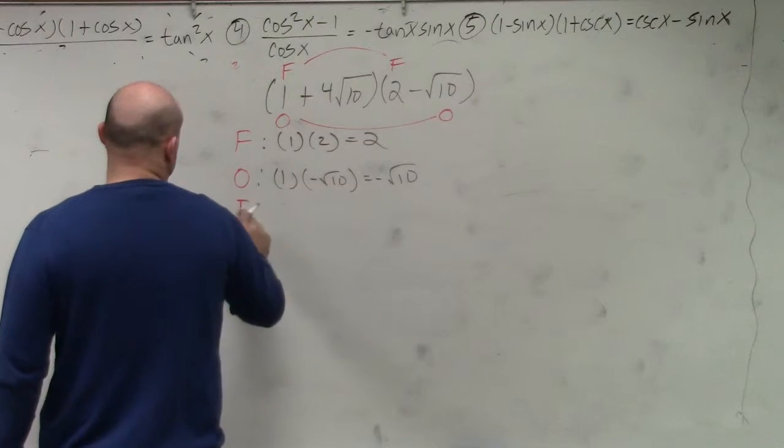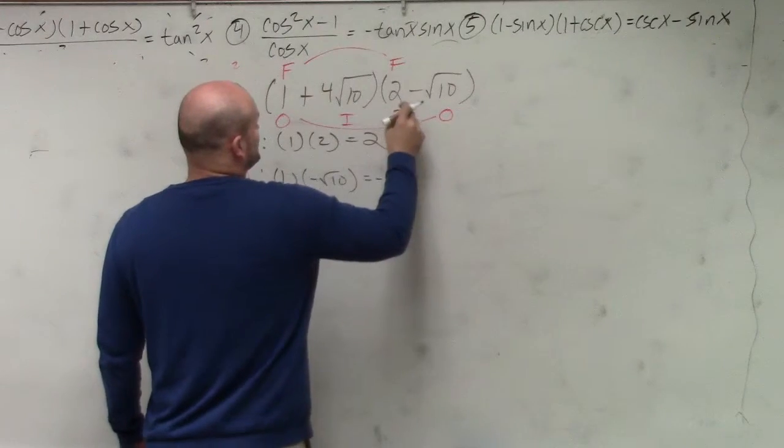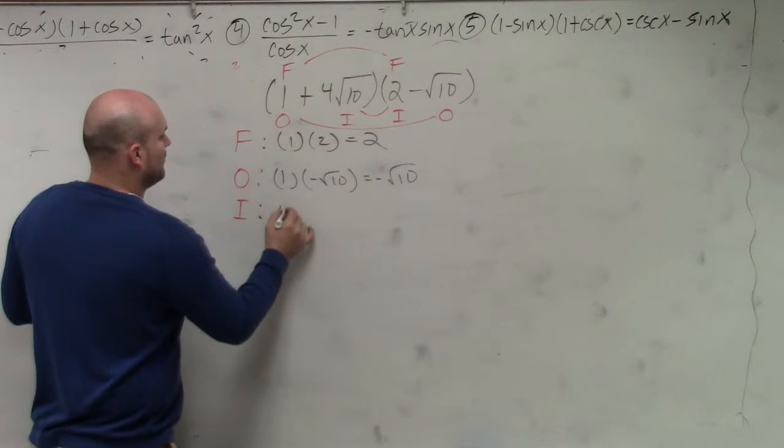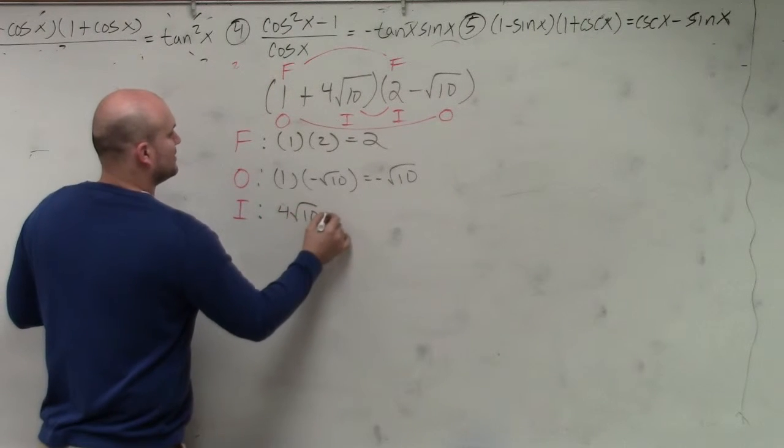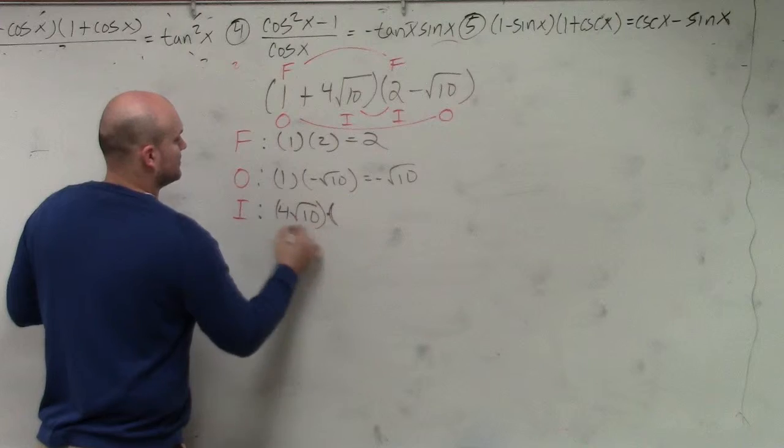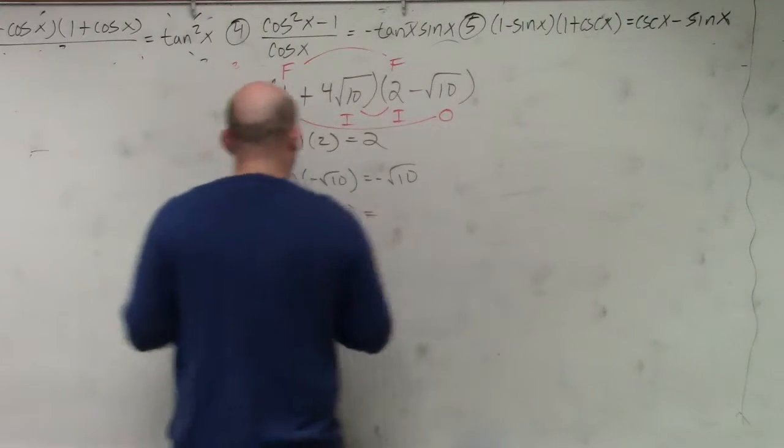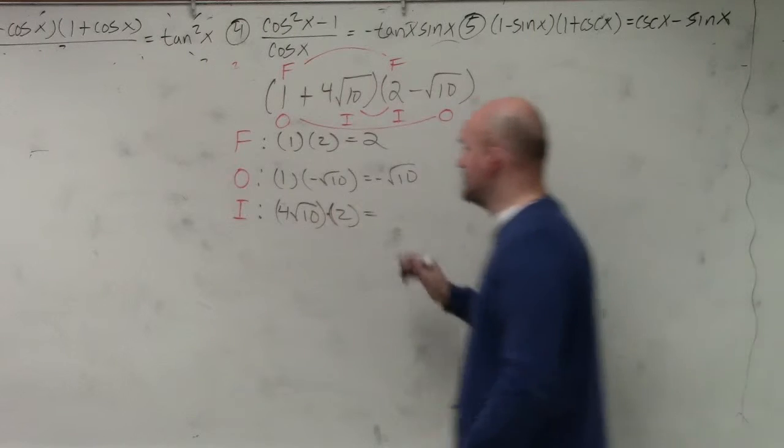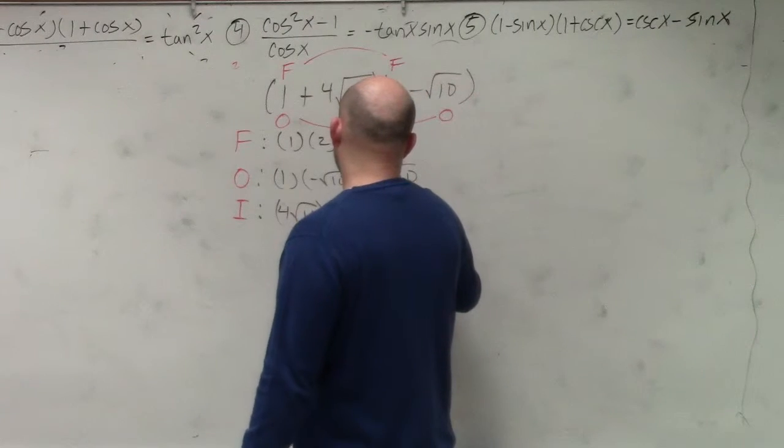Next one, inner, which is the inner terms of each binomial. So therefore, that is 4 square root of 10 times 2. Well, I can't multiply a number outside of a radical inside a radical. So I just multiply the 2 times 4, which is 8 square root of 10.